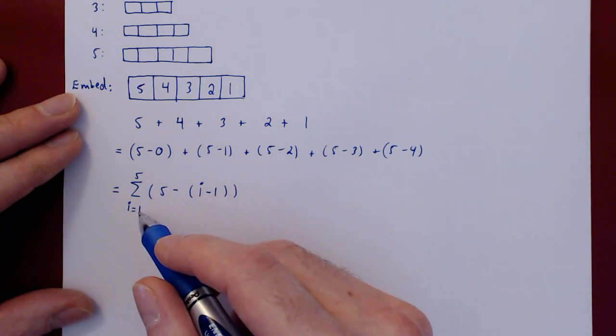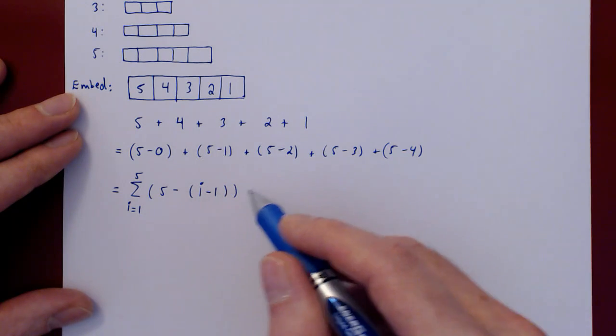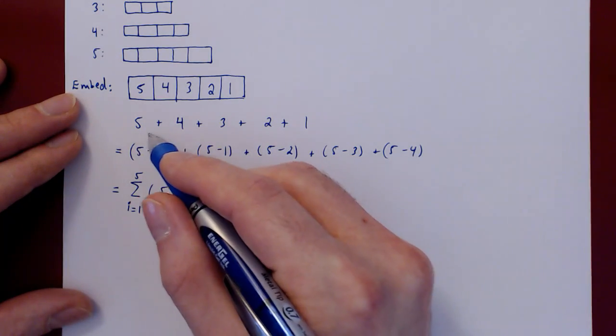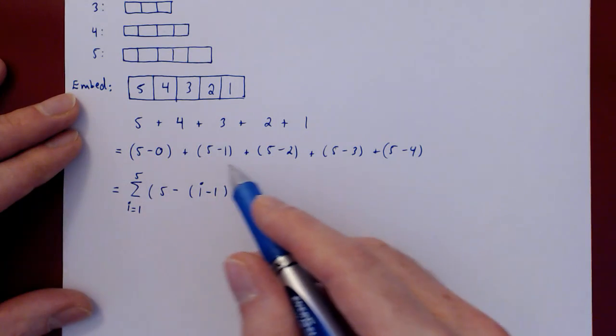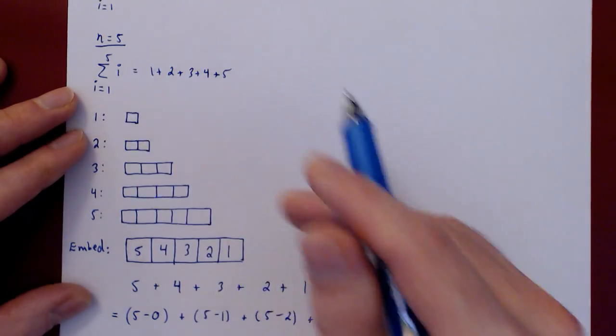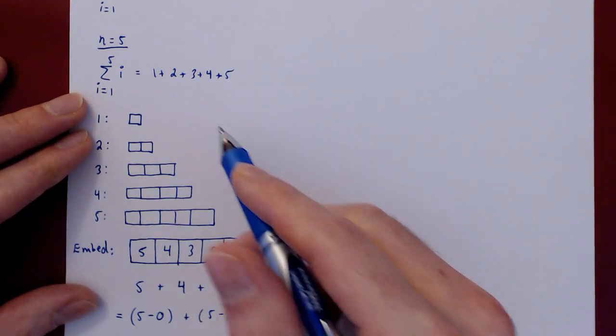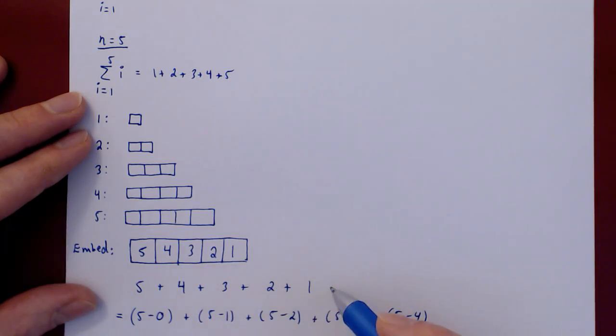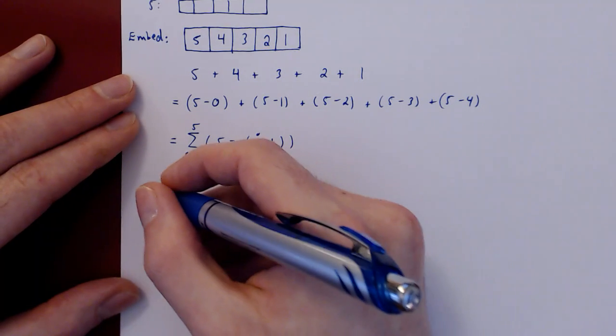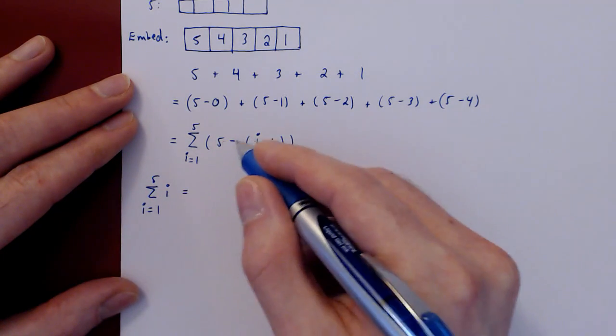And you can check back when i is 1, this is 0. When i is 2, 1, 3, 2, 4, 3, and 5, 4. So we now have the new way of counting the first 5 integers in a different way. So we have this sum being equal to this sum. They look different, but we know they are the same. And here it's quite obvious in the expanded form. It's the same 5 terms that we are summing, but in reverse order. So let's equate now the original sum to the new one.